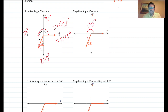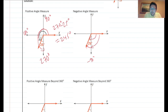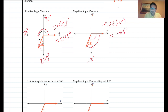For the negative angle measure, going clockwise: from the positive x-axis to the negative y-axis clockwise is negative 90 degrees, then add another 25 degrees in that direction. So negative 90 minus 25 equals negative 115 degrees. That's the negative angle measure.